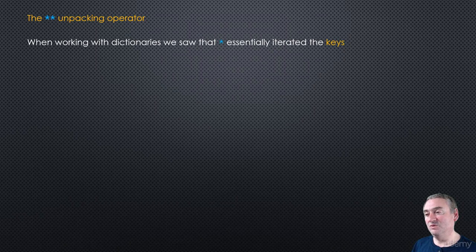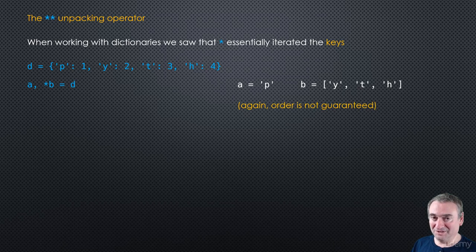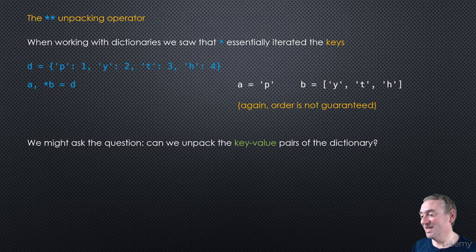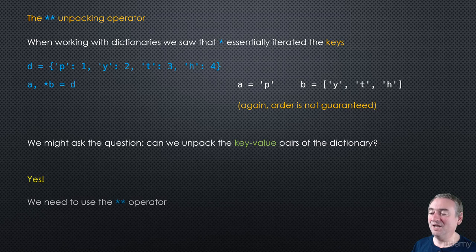With the single star on dictionaries, you only get the keys — the values are lost. So we might ask: can we unpack the key-value pairs and retain the values? The answer is yes, and for that we use the double-star operator `**`.